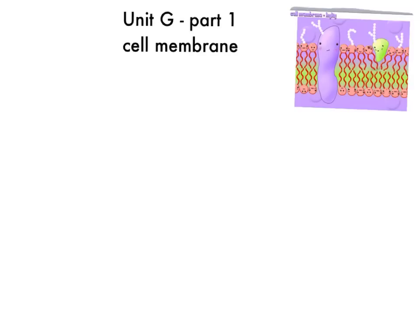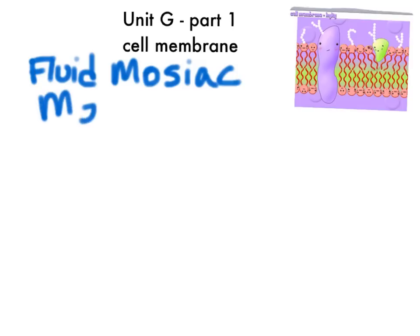This is Unit G, Part 1: the cell membrane. In this part we're considering the fluid mosaic model, which is a model to describe our cell membrane, made extra cute by this little diagram up here.